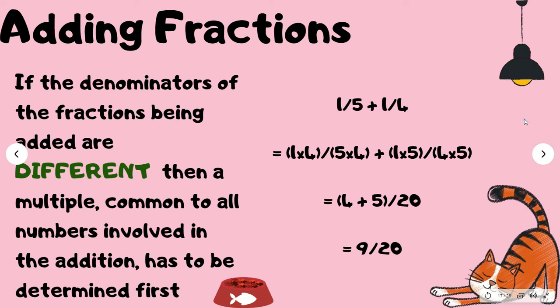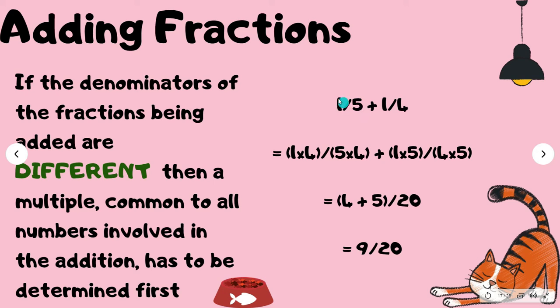If the denominators of the fractions being added are different, then a multiple common to all numbers involved in the addition has to be determined first. So you can't just say 1 over 5 plus 1 over 4 is equal to 2 over 9. You have to find a common denominator, and you can do that by multiplying both denominators together. So you would say 5 times 4, and whatever you do to the bottom you have to do to the top — 1 times 4, and then 1 times 5 — and you will end up with 4 plus 5 over 20, which is equal to 9 over 20.